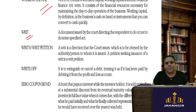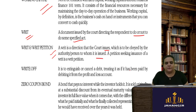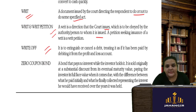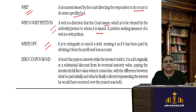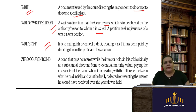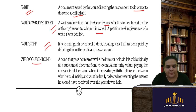A writ is a document signed by the court directing the respondent to do or not to do a specified act — habeas corpus is one of the writs. A writ petition is a direction issued by the court that must be obeyed by the authority or person to whom it is issued. Write-off is to cancel or extinguish a debt — sometimes debenture holders and preference shareholders write off their interest not paid by the company; fictitious assets and goodwill can also be written off from the books.